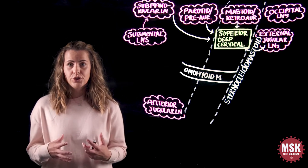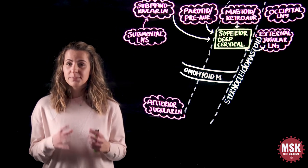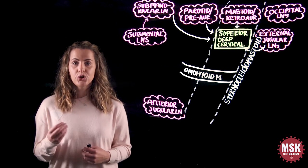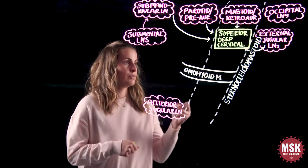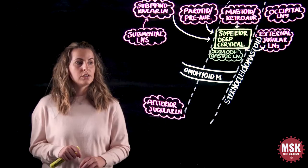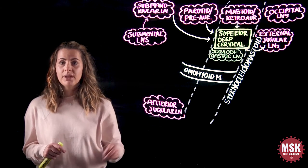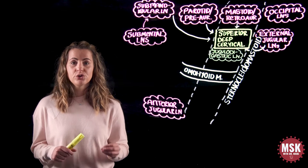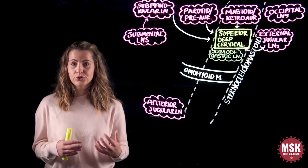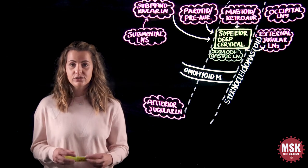One specific node within the superior deep cervical group that can be palpated when enlarged — particularly when the palatine tonsils undergo lymphadenopathy — is the jugulodigastric lymph node. Additionally, the retropharyngeal lymph nodes drain directly into the superior group. These deep retropharyngeal nodes drain the posterior pharynx, the palate, the paranasal sinuses, as well as the nasal cavity.